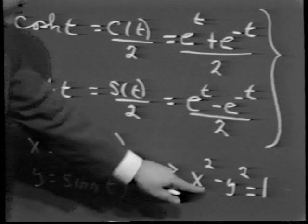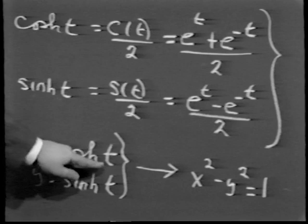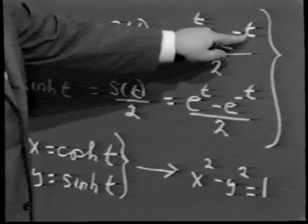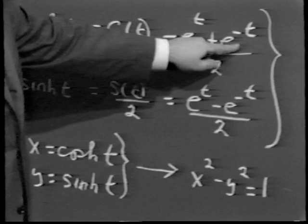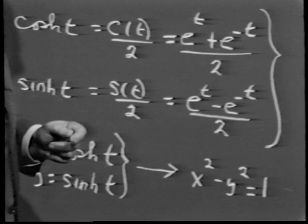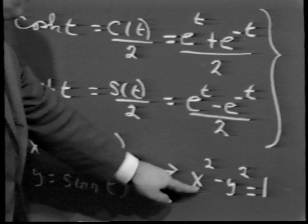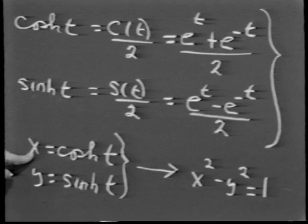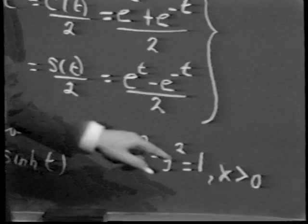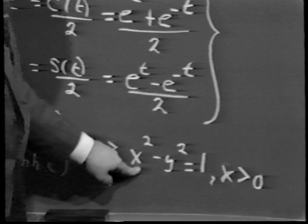Notice that the exponential can never be negative — e to the minus t is 1 over e to the t, which is still positive — so cosh can never be negative. Therefore, the parametrization x equals cosh t, y equals sinh t gives not the entire hyperbola, but only the branch for which x is positive, which is exactly the positive branch we chose to work with earlier.